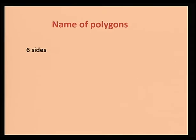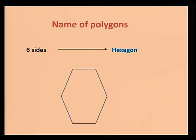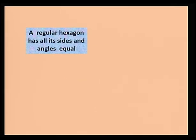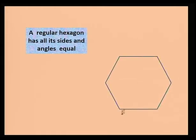Let's move on to polygons with six sides. A polygon with six sides is called a hexagon. This is the figure of a hexagon. If all the sides and angles are equal, we call it a regular hexagon — the angles are equal and the sides too.